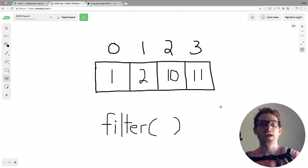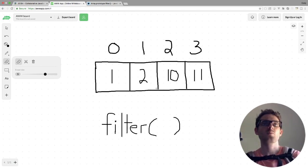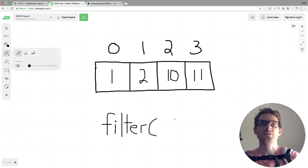All right, so right here we have an array of four elements: 1, 2, 10, and 11. And we want to just do a very simple filter to only grab the elements that are greater than 5. So to do that with the filter method, you provide it a callback. If you're familiar with the ES6 fat arrow, you can simply just do, let's say, n fat arrow...